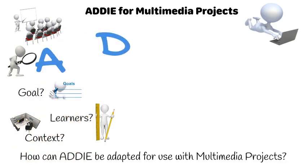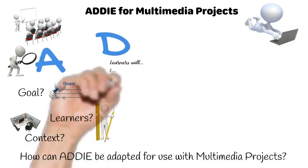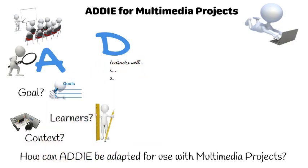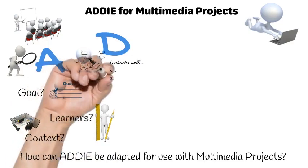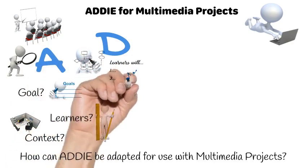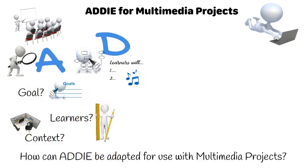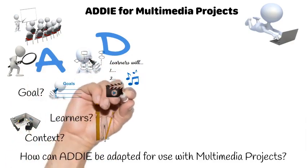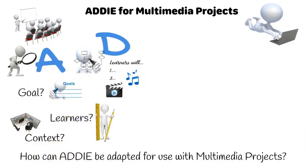D is for Design. In this phase, we break the goal down into learning objectives and figure out what our project needs. We will look at the structure of the project, identify any multimedia assets that need to be developed, and design the specific assets.